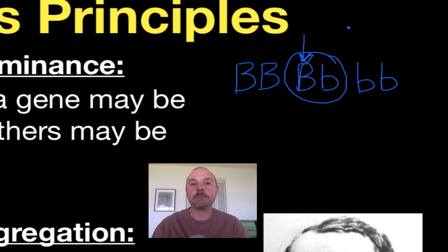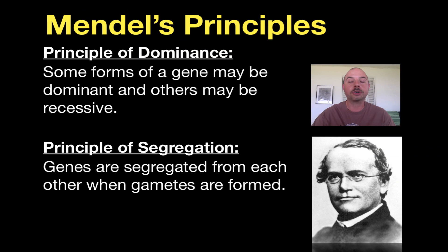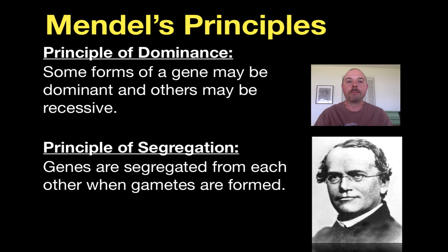My eye color is an example of this. My eyes are brown — my mom has brown eyes while my dad has blue eyes. So even though I'm heterozygous for brown eyes, I definitely have brown eyes because the brown-eyed allele is completely dominant over the blue. The other idea from Mendel is the principle of segregation: genes are segregated from each other when gametes are formed. As sperm and eggs are created through meiosis, these genes separate to help create genetic diversity.